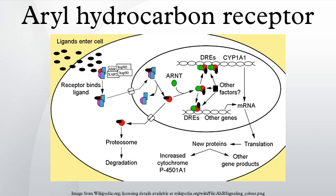Also contained within AHR are two PAS domains, PASA and PASB, which are stretches of 200 to 350 amino acids that exhibit high sequence homology to the protein domains originally found in the Drosophila genes period and single-minded, and in AHR's dimerization partner, the aryl hydrocarbon receptor nuclear translocator. The PAS domain supports specific secondary interactions with other PAS domain-containing proteins, as is the case with AHR and ARNT, so that heterozygous and homozygous protein complexes can form. The ligand binding site of AHR is contained within the PASB domain and contains several conserved residues critical for ligand binding.